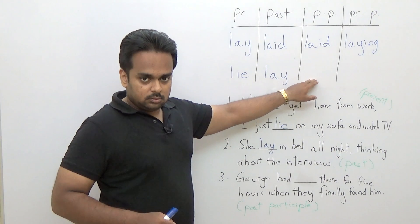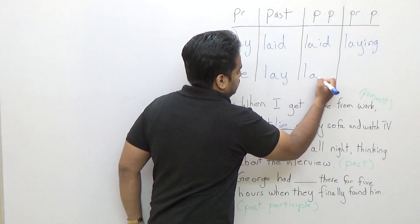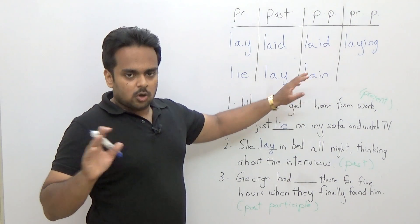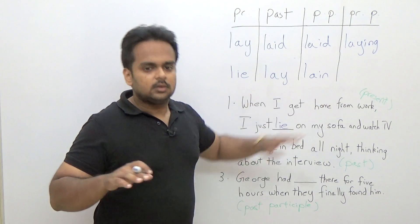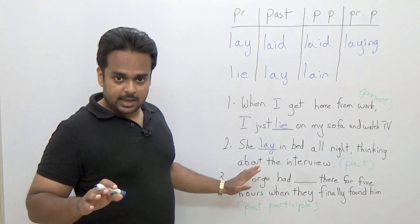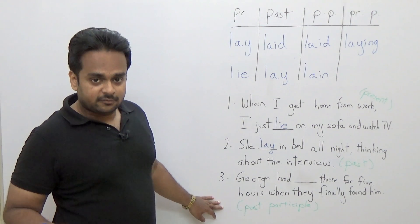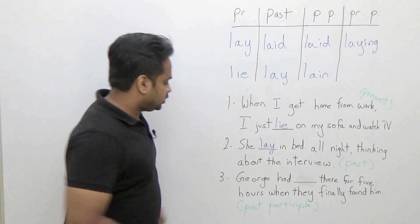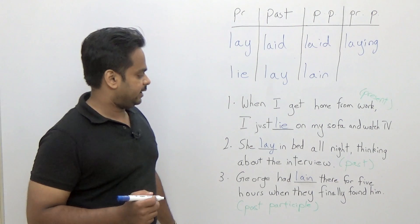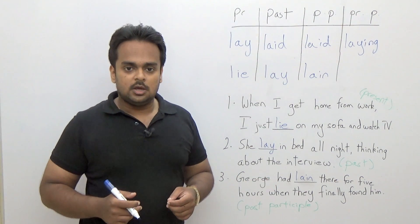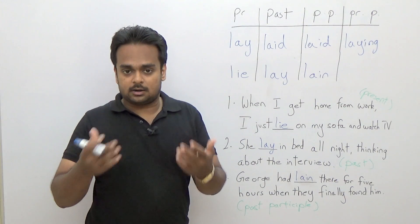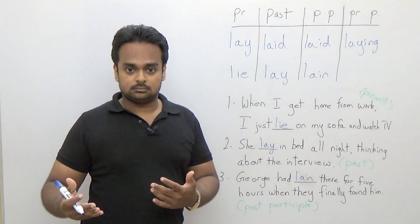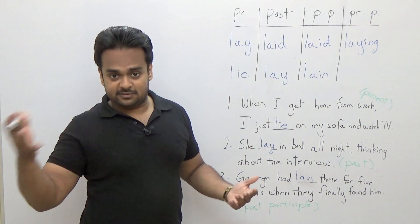The past participle of the verb 'lie' is 'lain'. This form is not very common, so don't stress too much about it. Here's an example in the past perfect tense, which uses the past participle: 'George had lain there for five hours when they finally found him.' Maybe George had a car accident and the ambulance only came five hours later — so George had lain there for five hours when they finally came and found him.